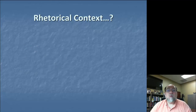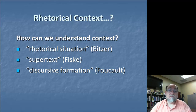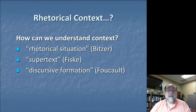When we do the research into understanding the rhetor, the occasion, and the audience, there are a number of different perspectives we might take. So how do we understand context? One way is through the rhetorical situation, a concept developed by Lloyd Bitzer in 1968. A second way comes from the tradition of critical cultural studies — that's John Fiske's notion of supertext. And finally, we can understand from social theory, specifically from Michel Foucault, the idea of the discursive formation. We'll take each of these ideas in turn.